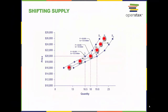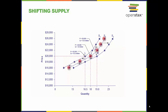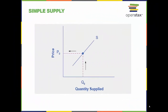Decreased supply means that at every given price, the quantity supplied is lower so that the supply curve shifts to the left from S0 to S1. Increased supply means that at every given price, the quantity supplied is higher so that the supply curve shifts to the right from S0 to S2. The supply curve can be used to show the minimum price a firm will accept to produce a given quantity of output.